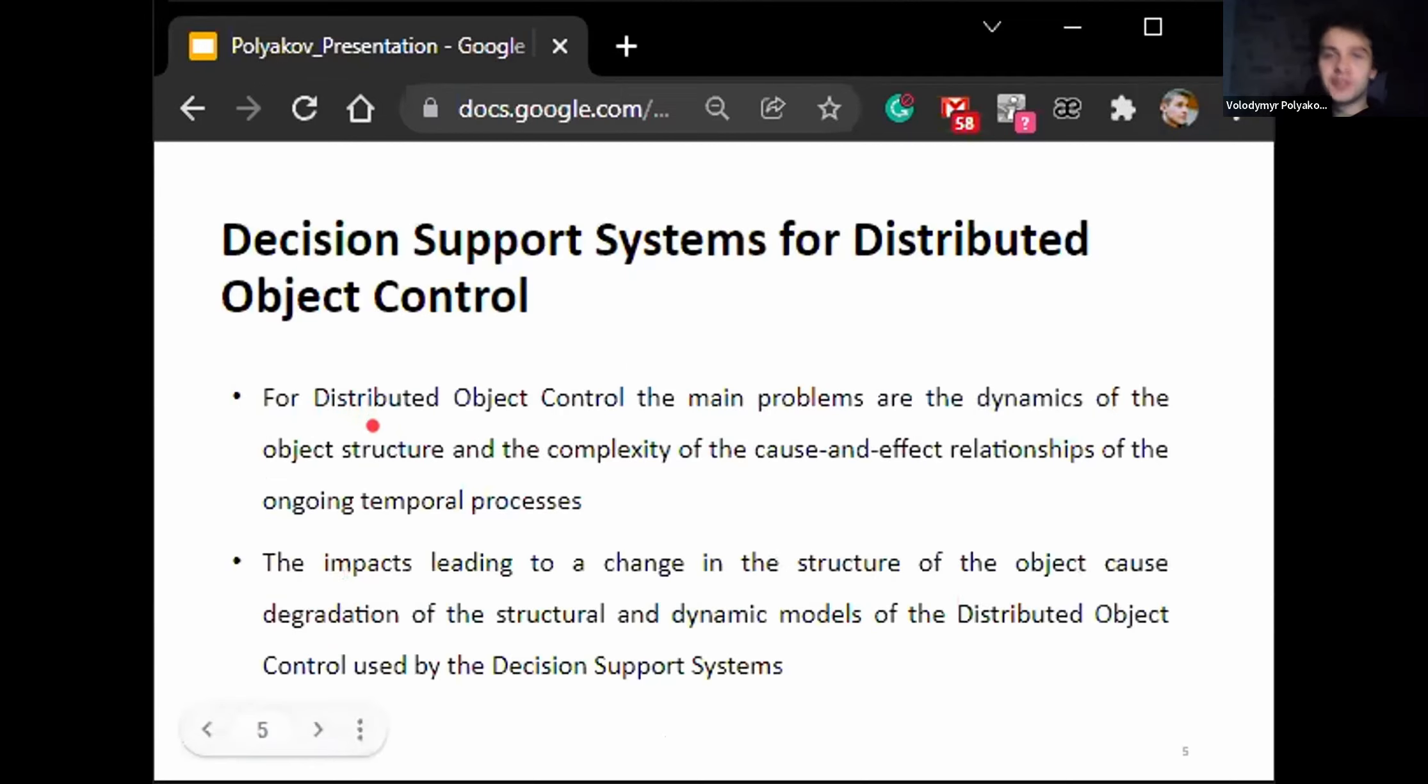For distributed object control, the main problems are the dynamics of the object, structure and complexity of the cause and effect relationships of ongoing temporal processes. The impact leading to a change in the structure of the object causes degradation of the structural and dynamic models of the distributed object control used by decision support systems. To ensure the required quality of information support for the development and decision making processes, multi-agent system can be used because of its flexibility. It allows them to have mechanisms for compensation of these impacts and to maintain correct representation of the structure and dynamics of the distributed object system.